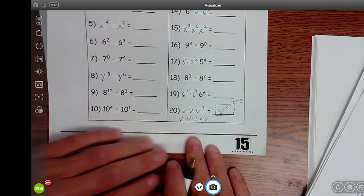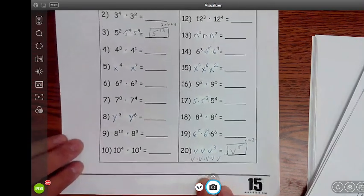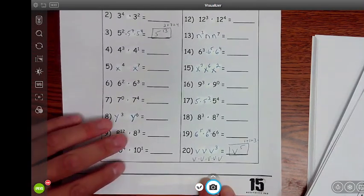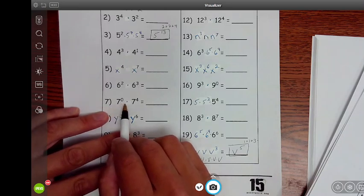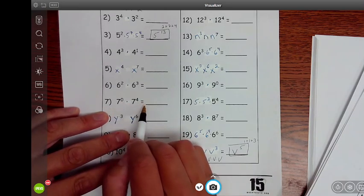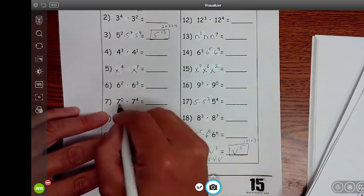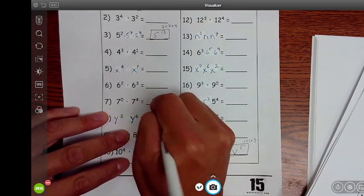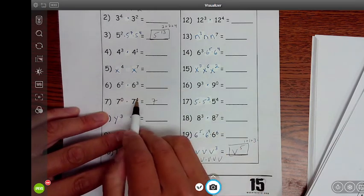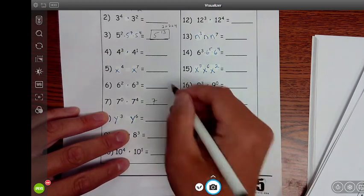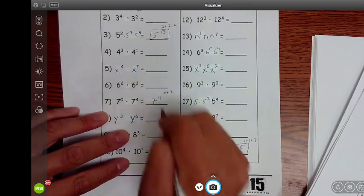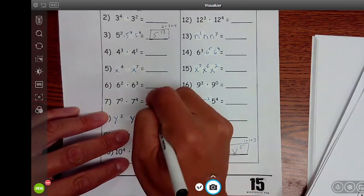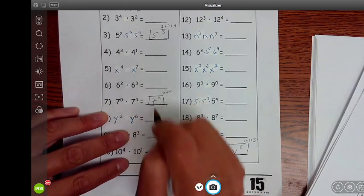And then the last one we'll look at, let's go ahead and look at number 7. Number 7, I have 7 to the 0 power times 7 to the 4th power. So the base is 7, and I'm doing the exact same thing, 0 plus 4. If the base is the same, you can add the exponents. 0 plus 4 is 4. So it's 7 to the 4th power.